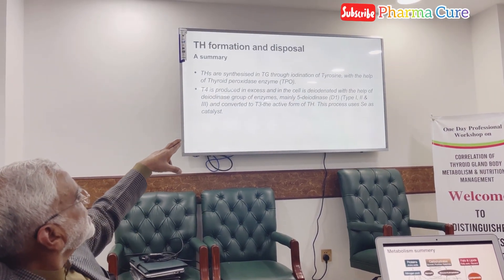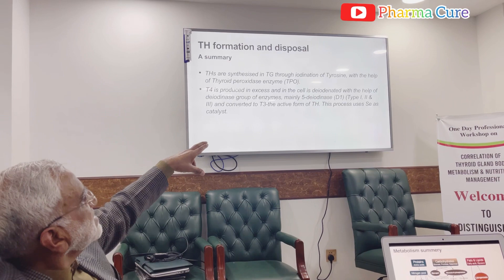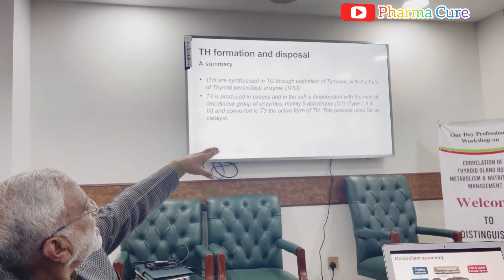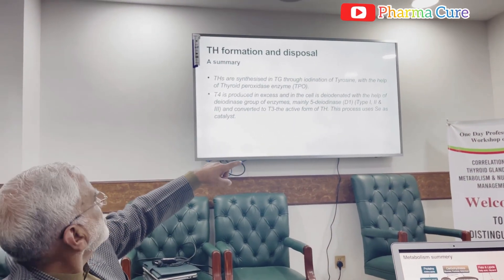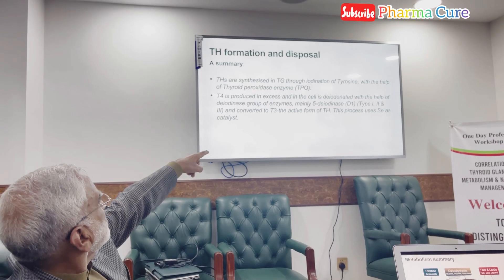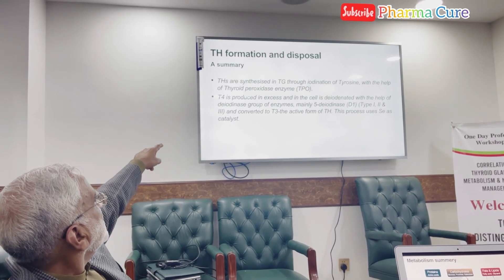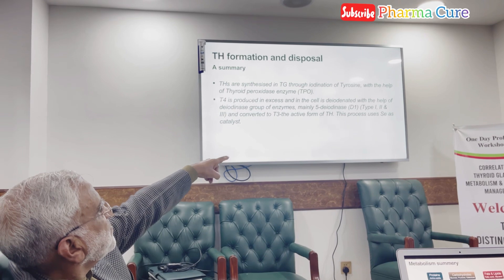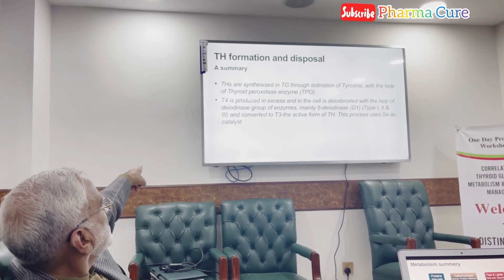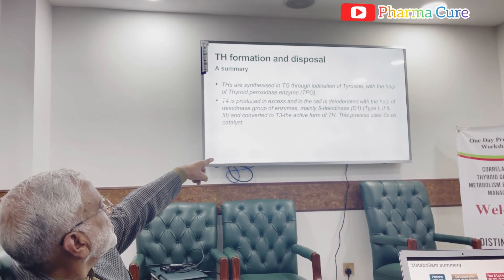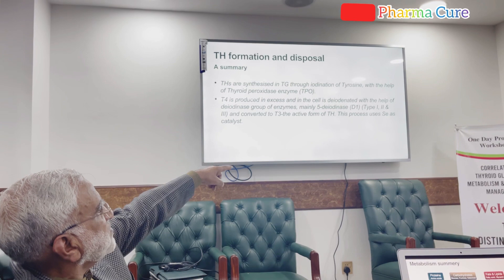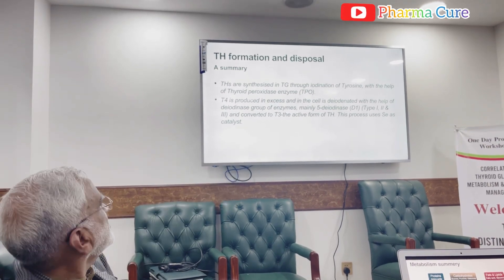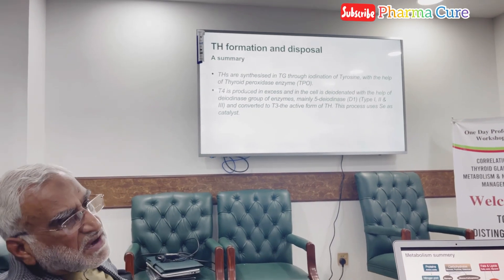T4 is produced in excess and in the cell it is converted by the deiodinase group of enzymes — namely 5-deiodinase — to T3, the active form of thyroid hormones. This process uses selenium as a catalyst.